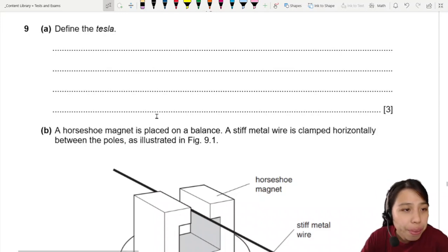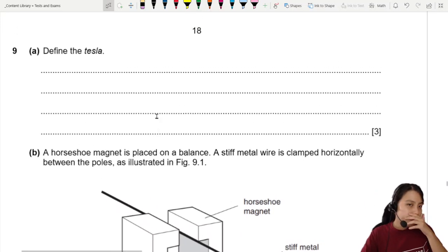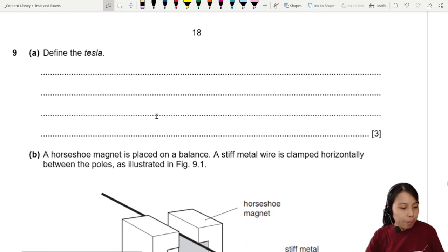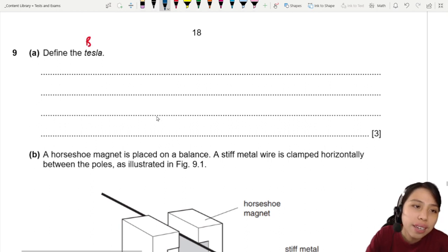Define the Tesla. So Tesla, there's two types of questions they can ask. They either ask you to define magnetic flux density, which is B, or they ask you to define the unit, which is a Tesla. And they both have slightly different answers.